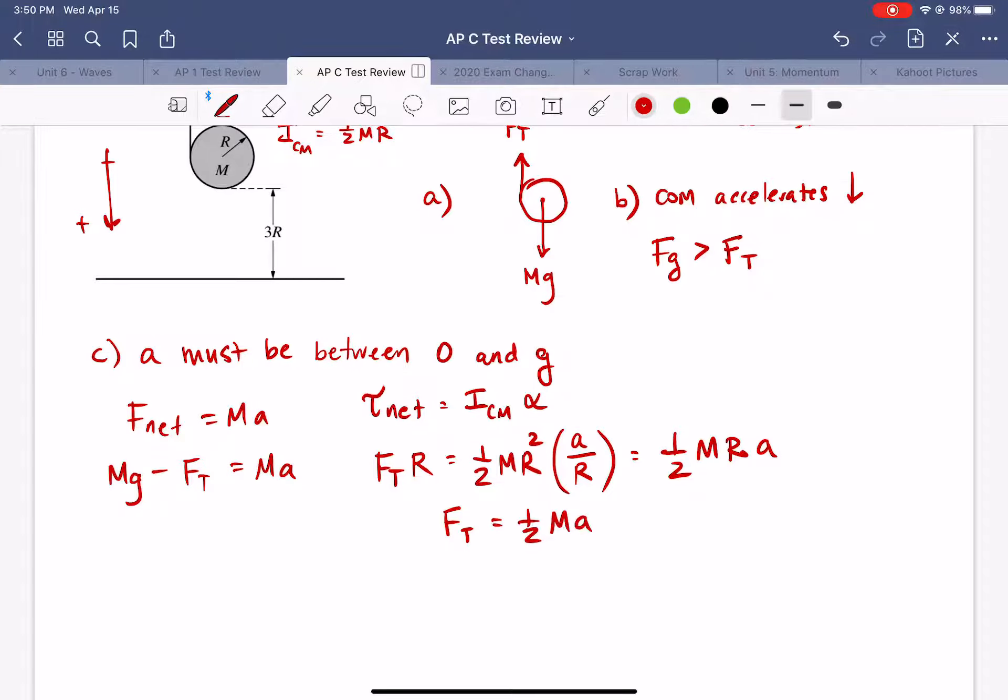If I plug that in over here I can rearrange things and get Mg equals 3/2 M A or the acceleration is equal to 2/3 G. So we do in fact get something that's between zero and G for the acceleration.